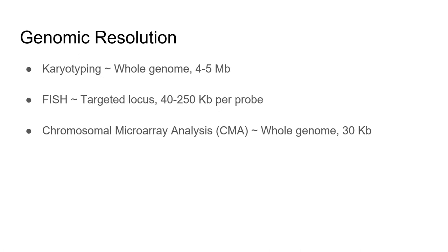Let's talk about microarrays. For comparison, karyotyping can detect large abnormalities on the order of 4 to 5 megabase pairs — abnormalities smaller than that can be missed. FISH does significantly better with a genomic resolution as low as 40 kilobases per probe, but FISH requires prior knowledge to target the suspected abnormality. Microarrays have a slightly better resolution still, at around 30 kilobases, and can be designed to look at the entire genome without any prior information.